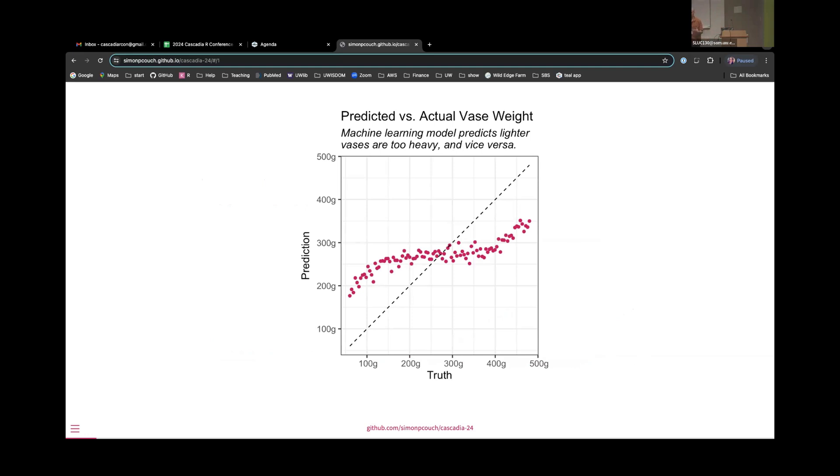We're looking at predictions from a machine learning model where on the x-axis we have the true value of some outcome variable, and on the y-axis we have the predictions from a machine learning model. This is situated in some context where we want to predict the weight of a vase, and for some reason our model tends to predict that the lighter vases are heavier than they actually are, and that the heavier vases are lighter than they actually are. So my question that's maybe a little strange is, is this fair?